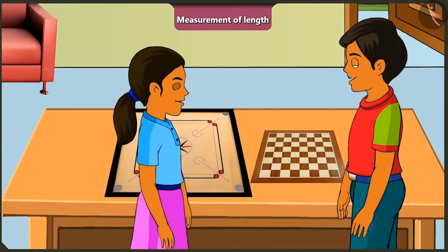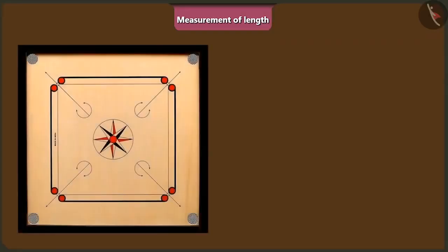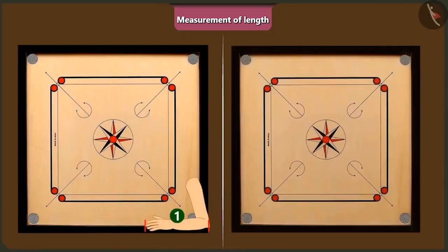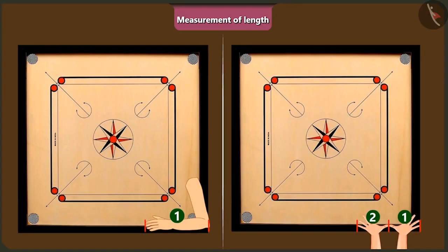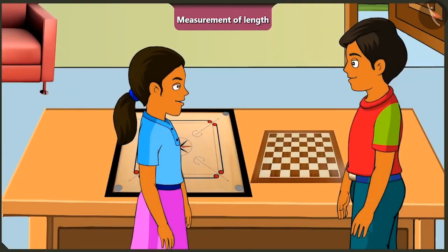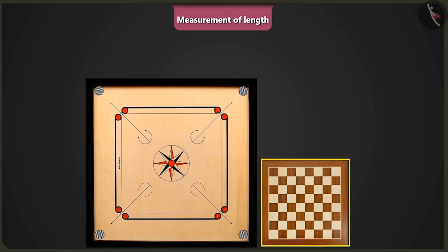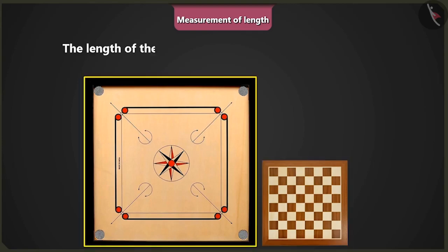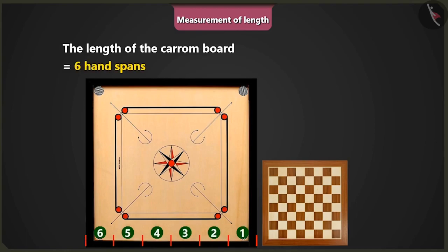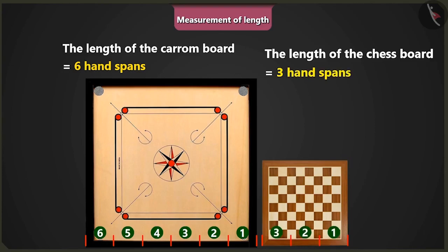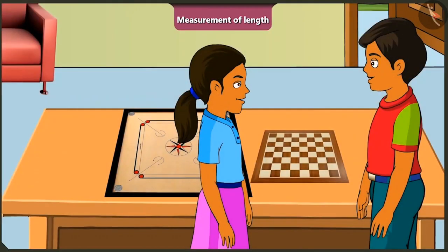So we can say that the length of a cubit of your arm is equal to 2 hand spans of your palm. Now can you determine the length of this chess board? The length of this chess board seems to be half of the carom board. The length of the carom board is equal to 6 hand spans, so the chess board would be 3 hand spans long. Oh wow! Absolutely correct!